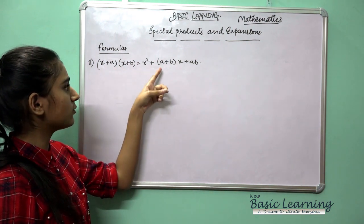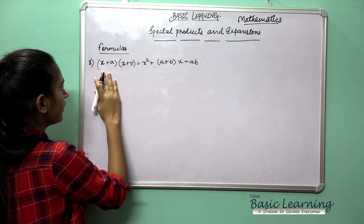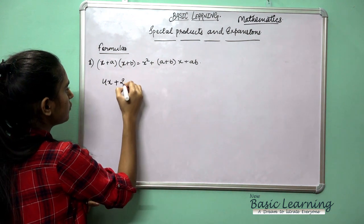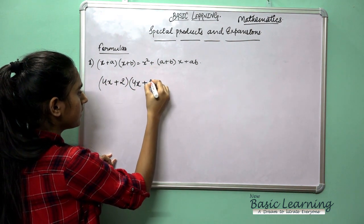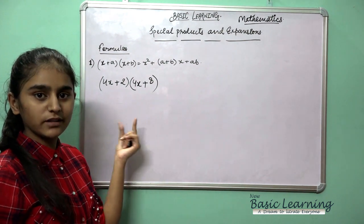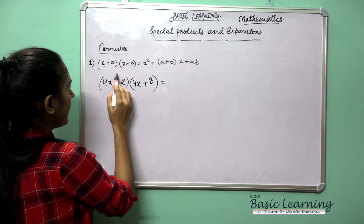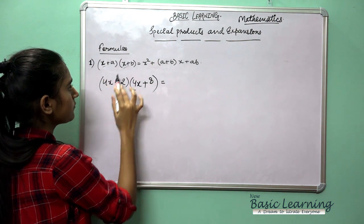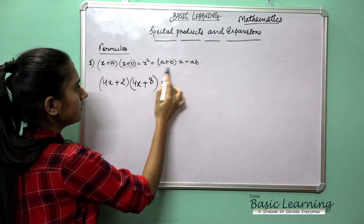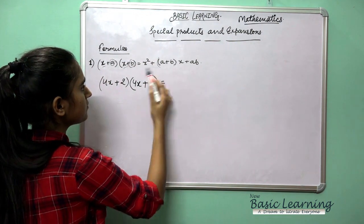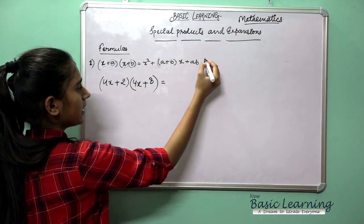I have written one formula here: (x + a)(x + b) = x² + (a + b)x + ab. Now, x times x equals x square. When we multiply x by x it gives x square. Then we add a plus b and multiply by x, and finally a times b gives the constant term.